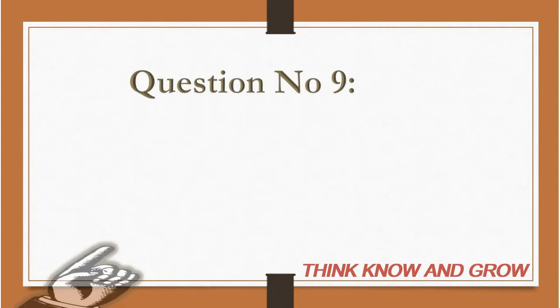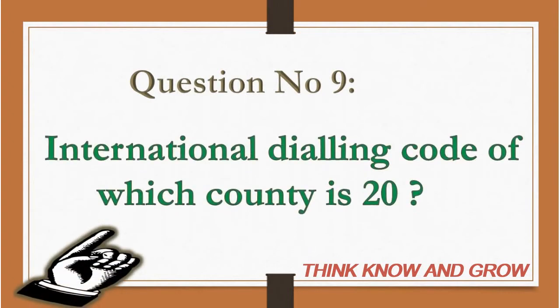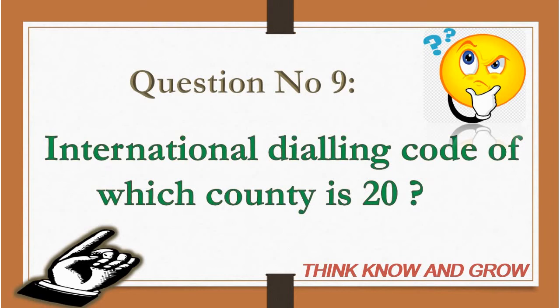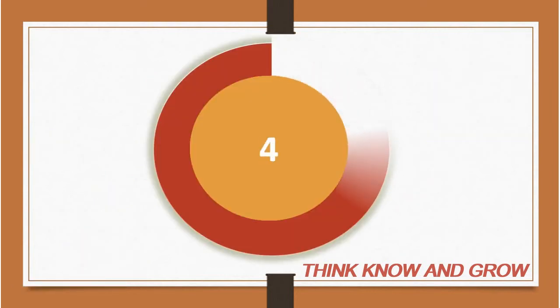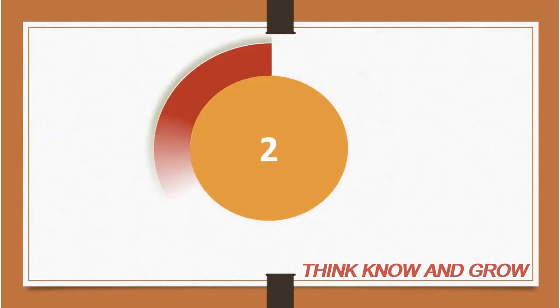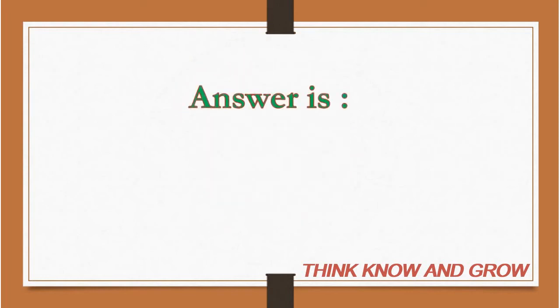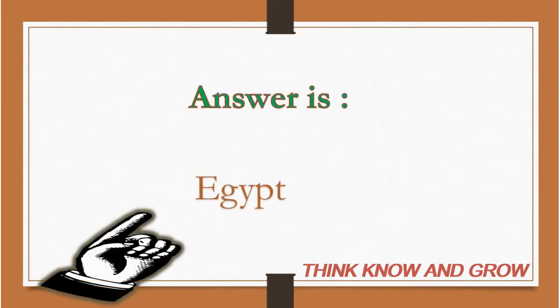Question number nine: International dialing code of which country is 20? The answer is Egypt.